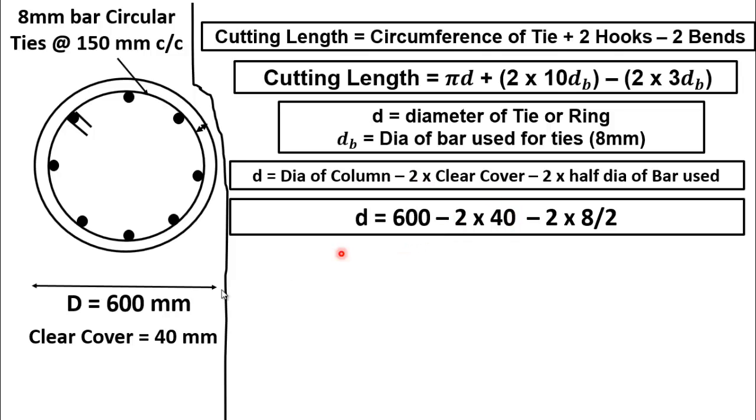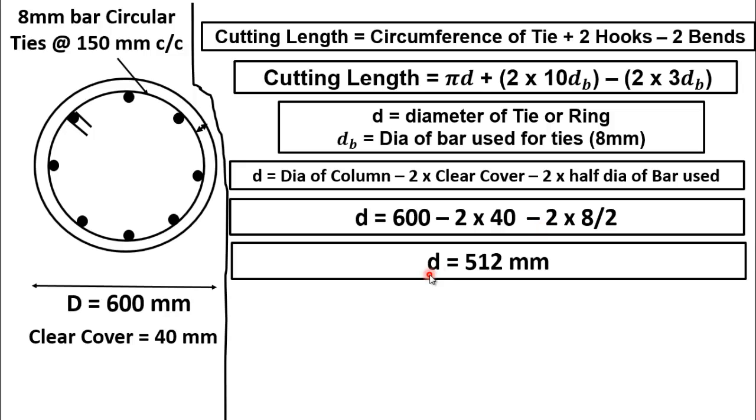Here the clear cover is 40 mm minus two times half diameter of bar used. Here the diameter of bar is 8 mm and dividing it by two we will get half diameter of bar. After simple calculation, we will get diameter of the tie or ring is 512 mm.